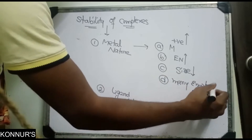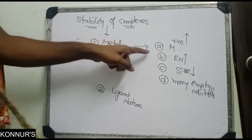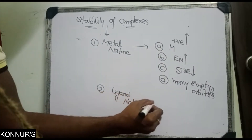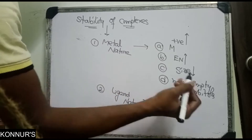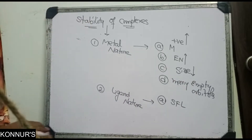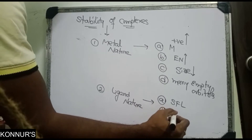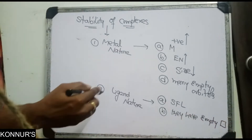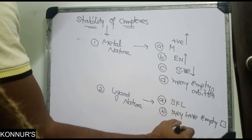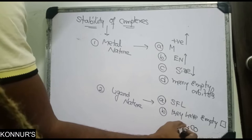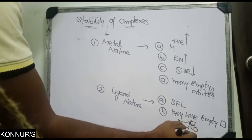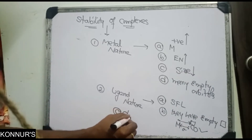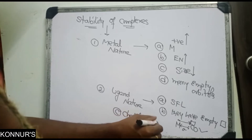The metal attracts electrons through its orbitals, which increases the stability of the complex. Regarding ligand nature: the ligand must compulsorily be a strong field ligand, as strong field ligands increase the stability of complexes. If the ligand has an empty orbital, it can accept electron density from the metal, forming a metal-to-ligand double bond — for example, carbon monoxide donating and accepting with the metal.